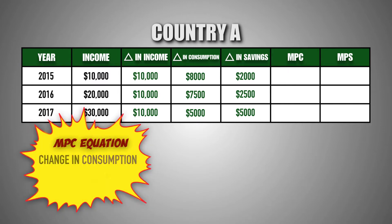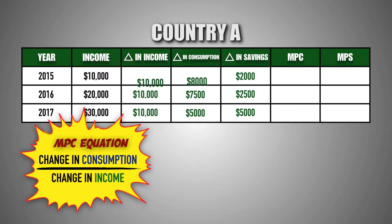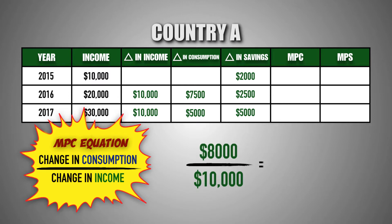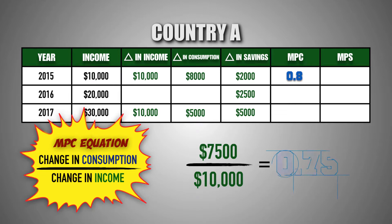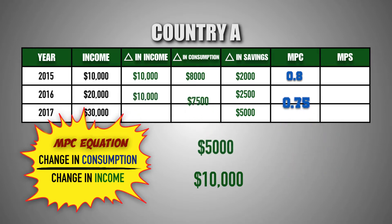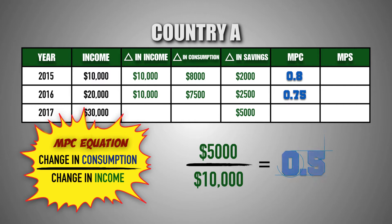To calculate the MPC, we take the change in consumption and divide by the change in income in each year. In 2015, the MPC in Country A was 0.8 — for every dollar of new disposable income, consumers spent 80 cents on goods and services. In 2016, the MPC was 0.75 — consumers spent 75 cents of every new dollar. In 2017, the MPC was 0.5 — consumers spent 50 cents of every new dollar on goods and services.